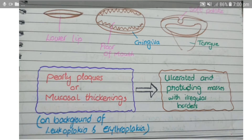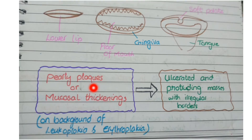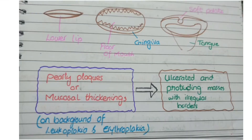Now let's see how these lesions appear. In the initial state, squamous cell carcinomas appear as pearly plaques or mucosal thickenings on the mucosa of the oral cavity. These lesions develop on the background of leukoplakia and erythroplakia, as both are pre-malignant conditions on which oral squamous cell carcinomas can develop.